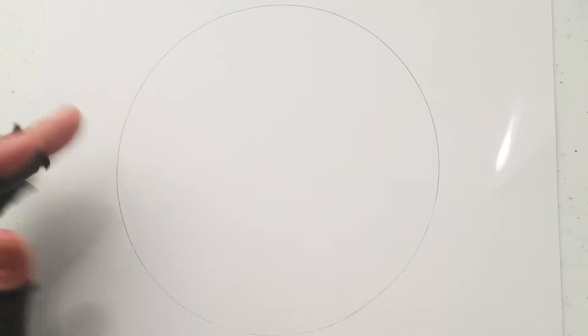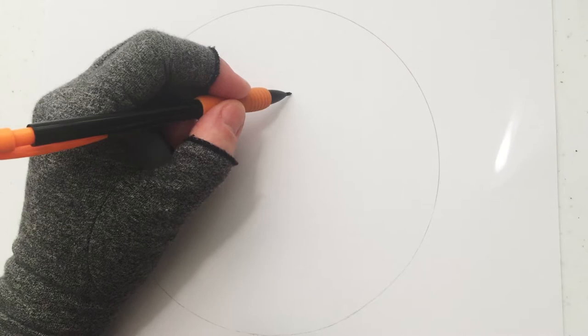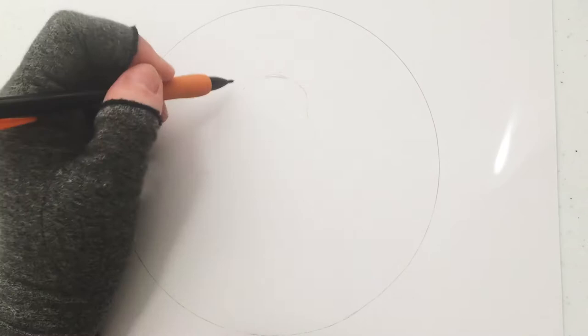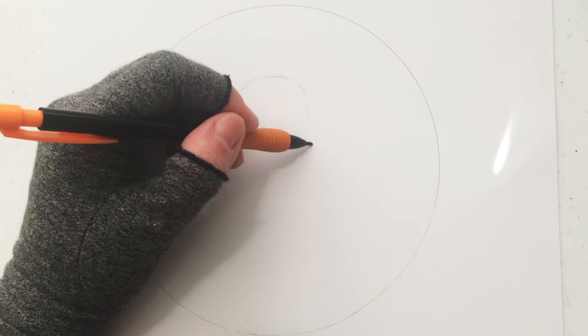Make sure to make the bottom portion of the head wider because, as you know, some hamsters or most hamsters have plump cheeks due to stuffing food in them and hoarding their food.